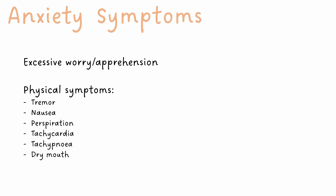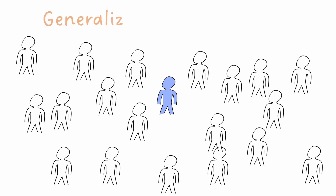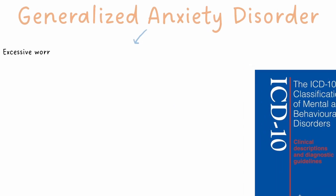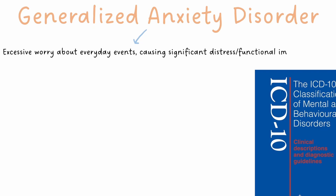Although these feel unpleasant, they're all normal symptoms to experience, and for most people will not happen to a level of severity that impairs their function in day-to-day life. However, around 1 in 20 people will experience Generalised Anxiety Disorder. The ICD-10 defines Generalised Anxiety Disorder as excessive worry about everyday events, causing significant distress or functional impairment, and it's not necessarily triggered by a dangerous or difficult situation.